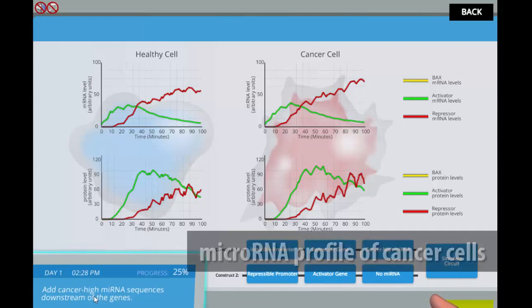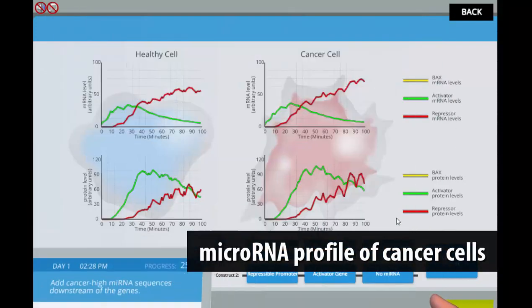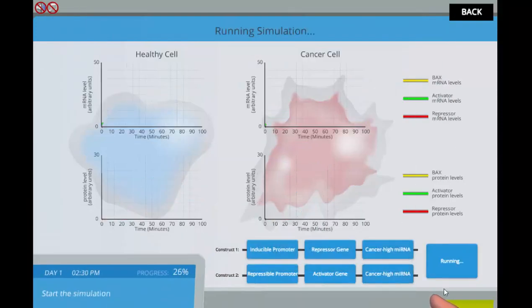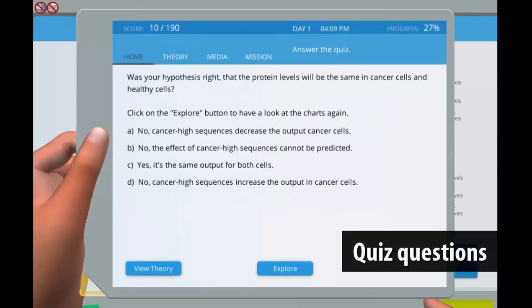They will use the specific microRNA profile of cancer cells to design an apoptotic biological circuit that will selectively kill cancer cells. Quiz questions will be asked throughout the experimental processes.